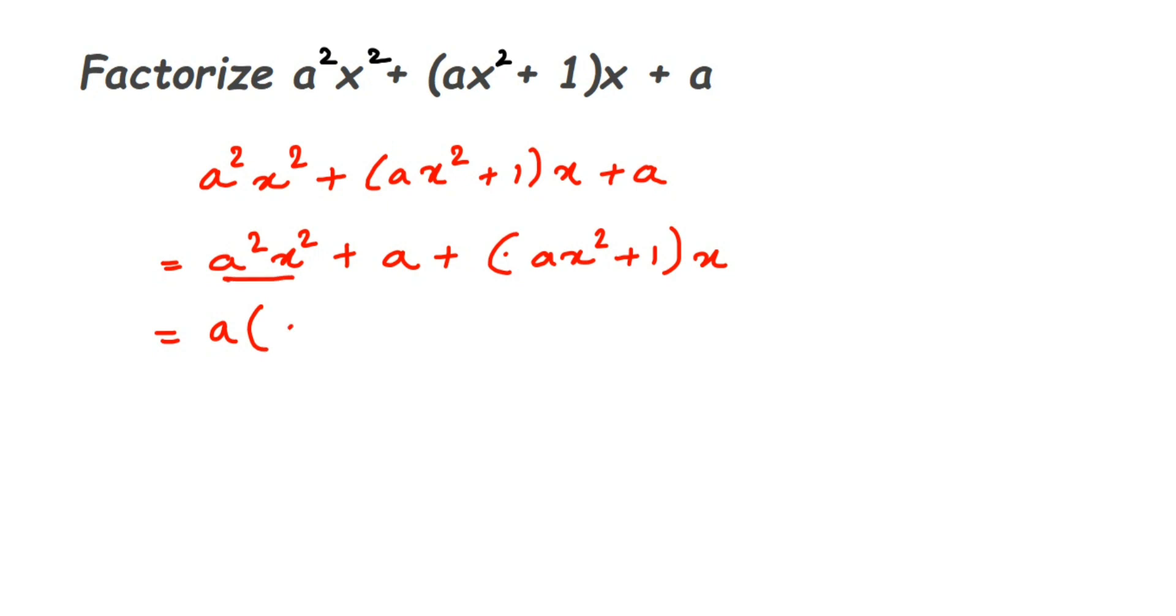If I take out one a, another a is left and x² remains. And from here, if I take the a outside, one will be present because a can be written as 1×a. So it will be a(ax² + 1) + (ax² + 1)x.